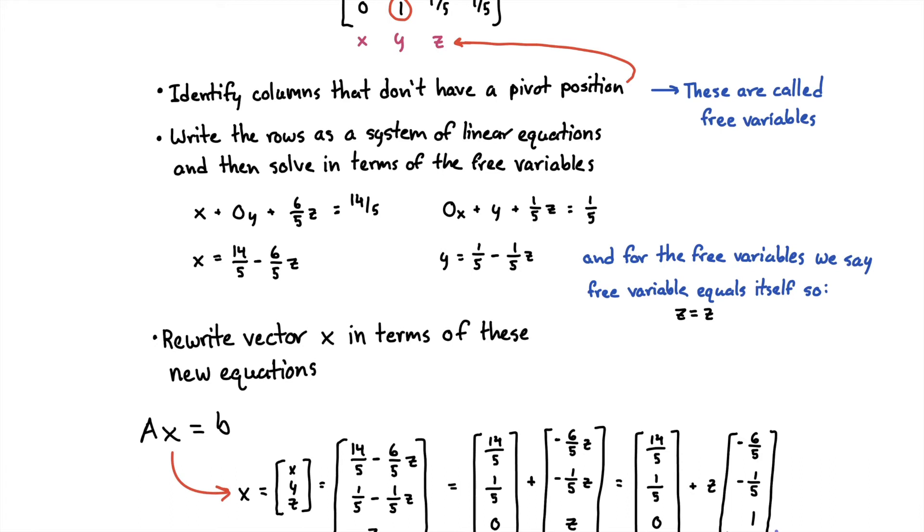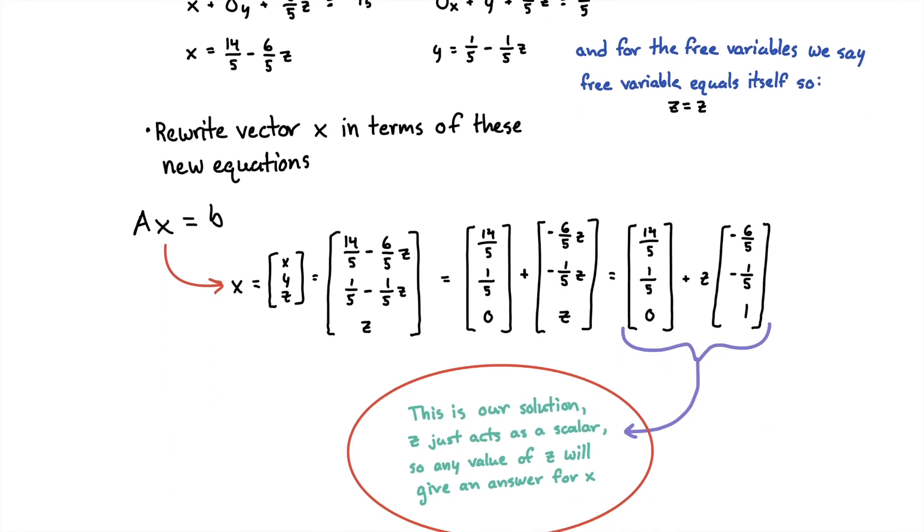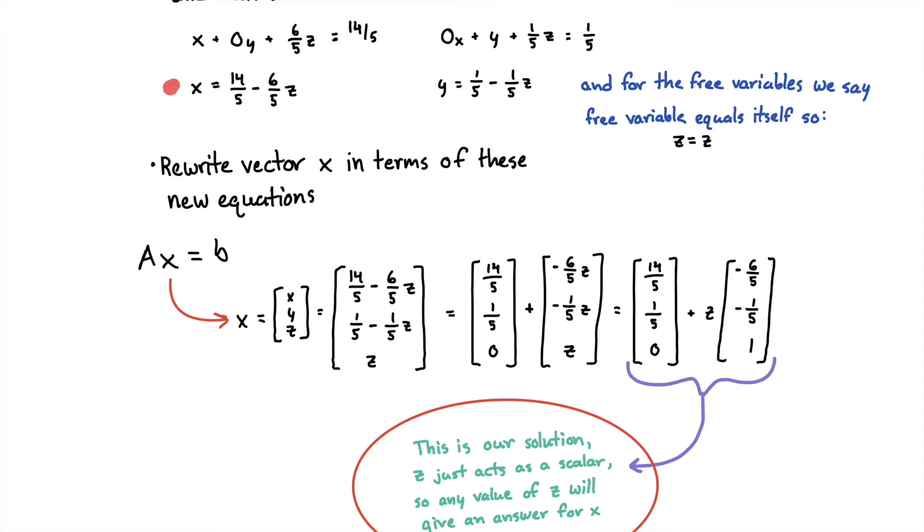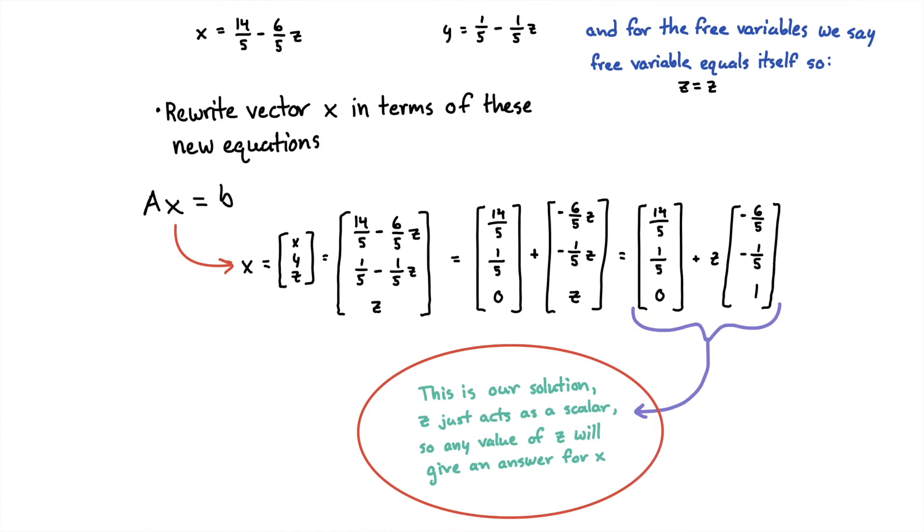Next, we want to use these equations we just found and write X in terms of those equations. We have X, and the variable X is going to become the new X. This Y is going to become the new Y, and then we just have Z down here at the end. It stayed the same because it's a free variable. Then we're going to simplify our matrix so that everything with a variable is separate from everything without a variable. If we just added these two matrices together, we would get this again. Finally, we're going to factor out our variable so that we get this form right here. That's going to be our solution.